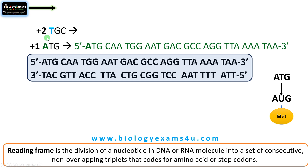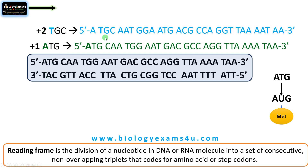The second frame, the plus two frame, begins with the second nucleotide T, giving triplets TGC, AATGGA, and so on. You can see the reading frame has changed, producing different codons and therefore different amino acids in the protein.